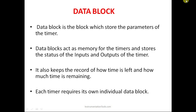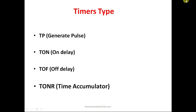Now let us see the different types of timers available in TIA Portal. The first one is TP — the generate pulse timer, used when you want an output to be high for a particular time. Next is TON — an on-delay timer, used to turn on the output after a delay. Then TOF — an off-delay timer, which provides a delay in turning off. Finally, TONR is a special case of the TON timer — a retentive on-delay timer.